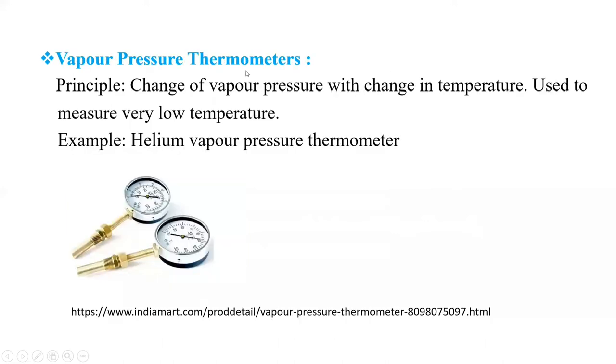Next is vapor pressure thermometers. Change of vapor pressure with change in temperature is its principle. It is used to measure very low temperature. Its example is helium vapor pressure thermometer. Here in this figure it is shown.